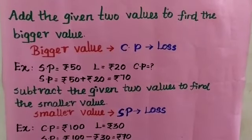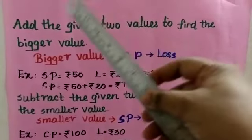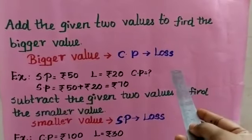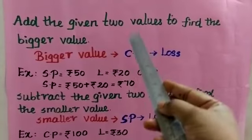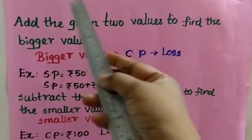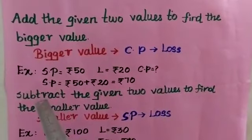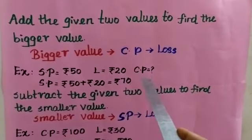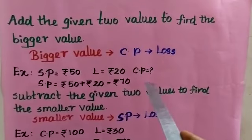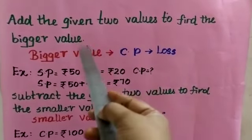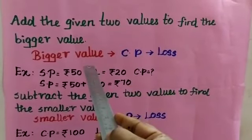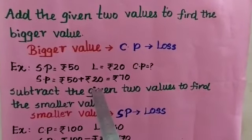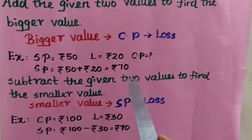Now let me explain the same concept in loss. Add the given two values to find the bigger value. The bigger value in loss is cost price. So whenever we are finding the cost price in loss, we should add the given two values. For example, the selling price is Rs. 50 and the loss is Rs. 20. We are finding the cost price. Cost price is the bigger value in loss, so when we are finding the cost price, we should add the given values. Rs. 50 plus Rs. 20, we will get the answer as Rs. 70.